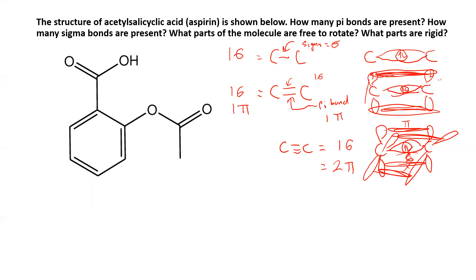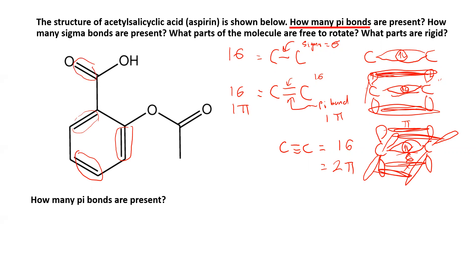So when I look at a structure and I want to know how many pi bonds, that's easy — I just look at the number of multiple bonds. In this structure, I see a double bond here, a double bond here, a double bond here, and a double bond here. Each double bond gives me one sigma but also one pi. So because there are five double bonds, that means I have five pi bonds.